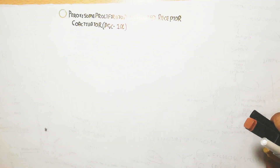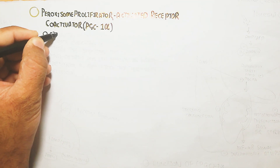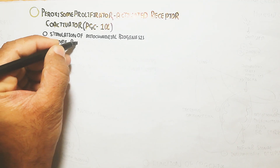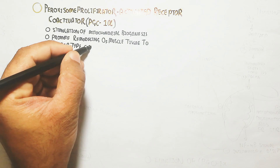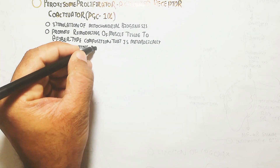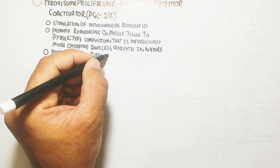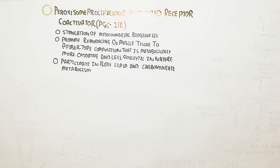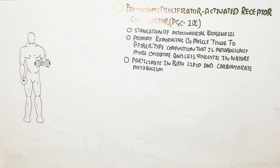In this video we will understand the peroxisome proliferator-activated receptor co-activator, known as PGC1-alpha. PGC1-alpha stimulates mitochondrial biogenesis and promotes remodeling of muscle tissue toward a fiber type composition that is metabolically more oxidative and less glycolytic. This means greater oxygen consumption capacity due to more mitochondria. Importantly, fast-type muscle fibers develop and participate in both lipid and carbohydrate metabolism.